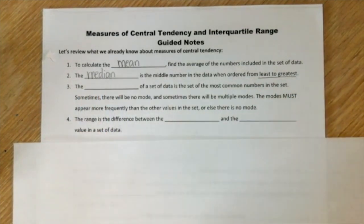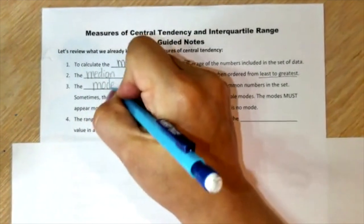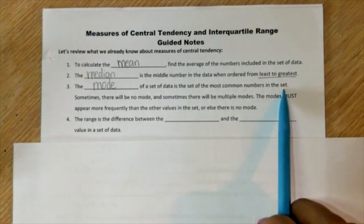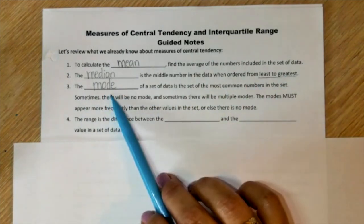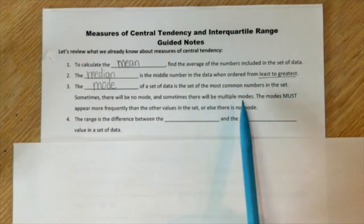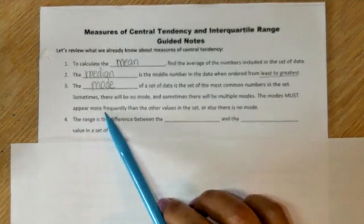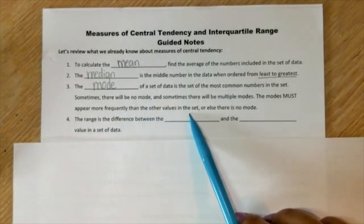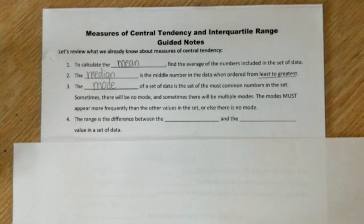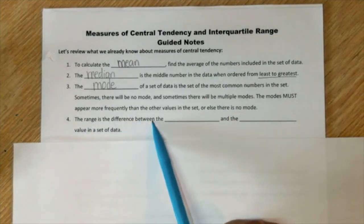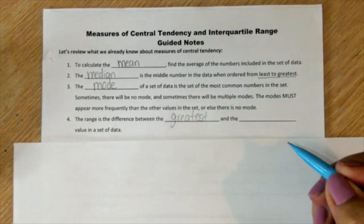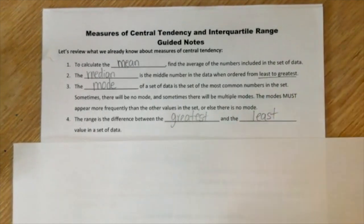Number three, the mode. The mode of a set of data is the most common number in the set — the number that repeats the most. Sometimes there will be no mode and sometimes there will be multiple modes. The modes must appear more frequently than the other values in the data set, or else there is no mode. Number four, the range is the difference between the greatest and the least value in a set of data.